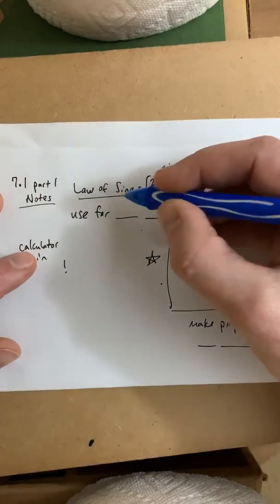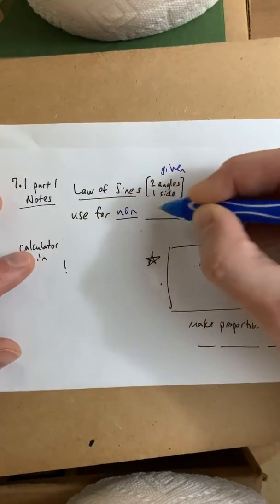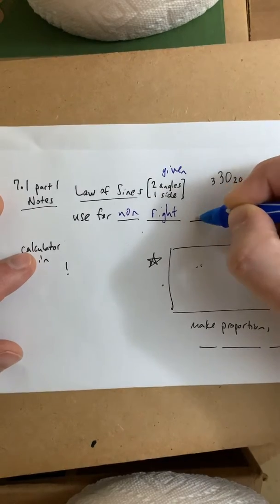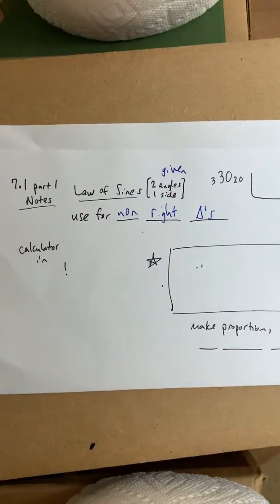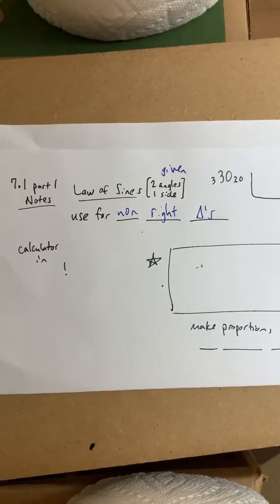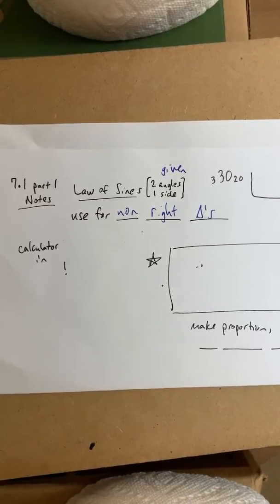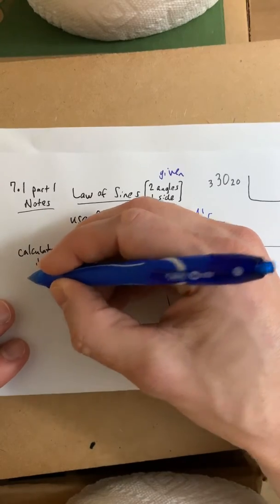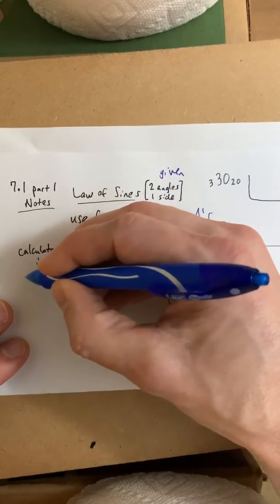You all know that most of the time trigonometry is reserved for right triangles, but there are some properties and formulas and laws that apply to non-right triangles as well. We're going to use the law of sines for non-right triangles. Make sure your calculator is not set to radians. You want your calculator set to degrees.